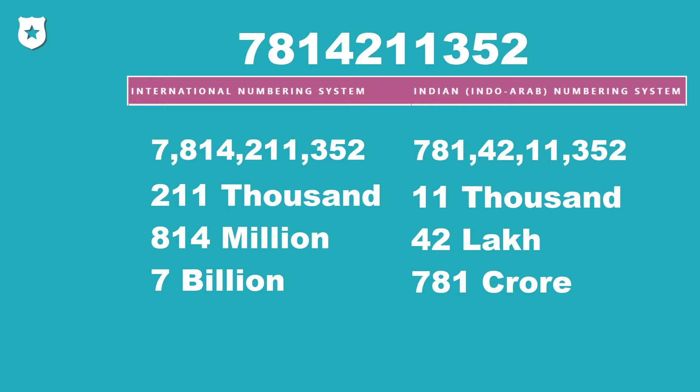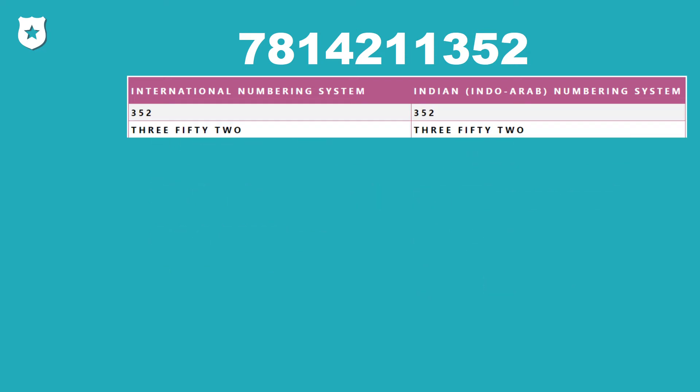In both numbering systems the first group contains the digits 3, 5, and 2. Usually people from Europe will read it as 352, and in both the international and Indian numbering systems this will also be read as 352. Now let's add digits to the left side and see the difference between the two numbering systems.